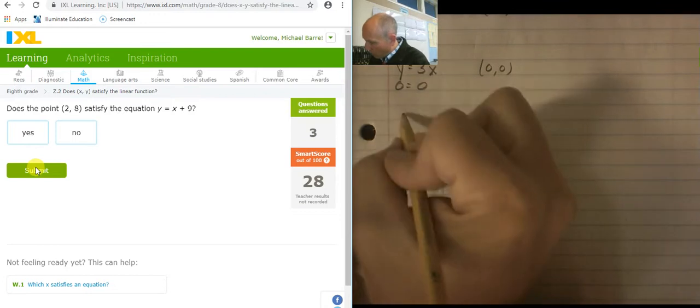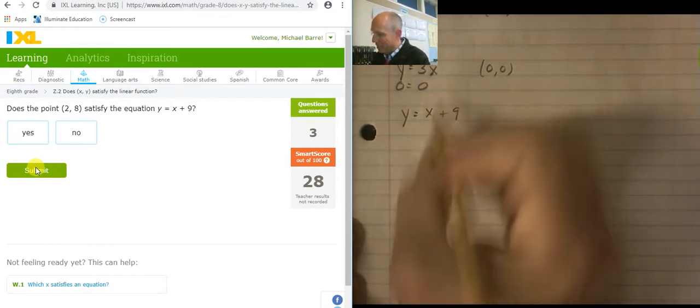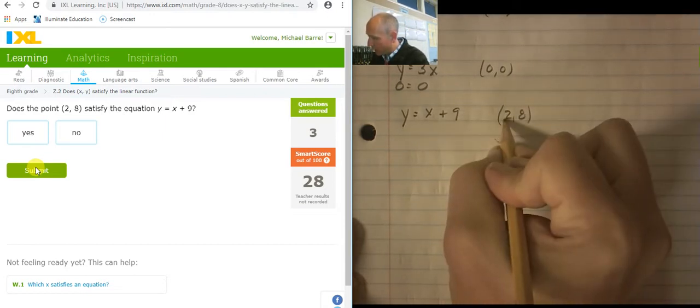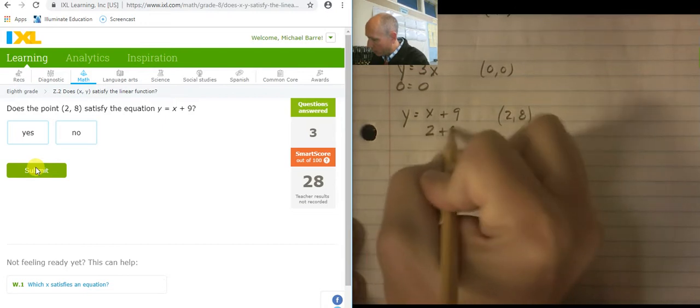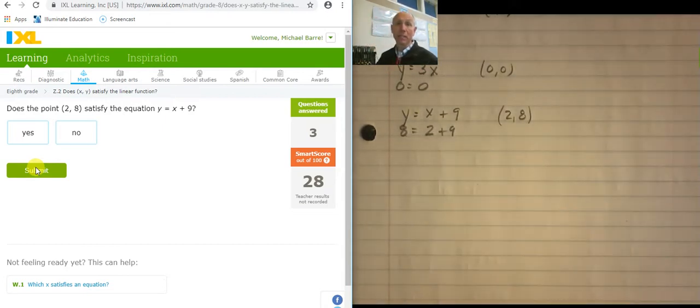Next one, y equals x plus 9. And what am I plugging in? 2 comma 8. 2 is the x. That's going to go right here. 2 plus 9. Y is the 8. 8 equals 2 plus 9. No.